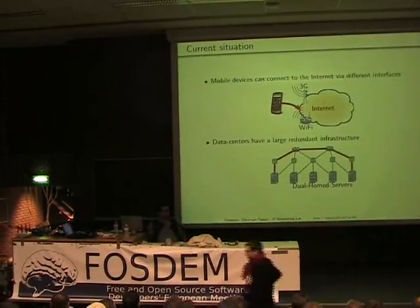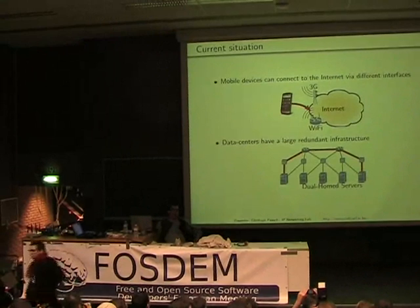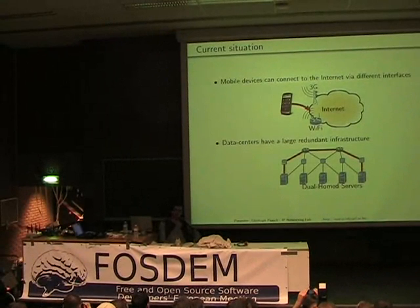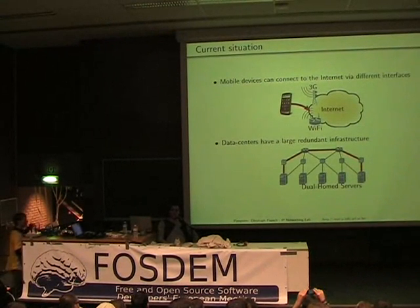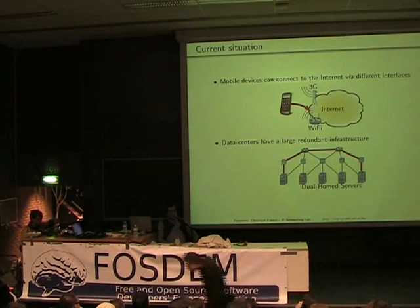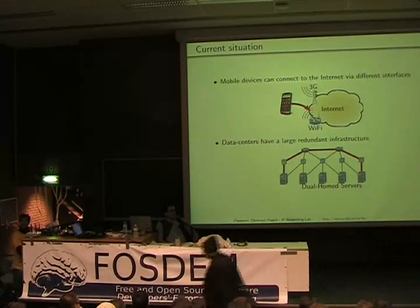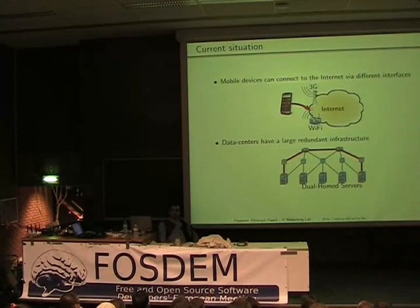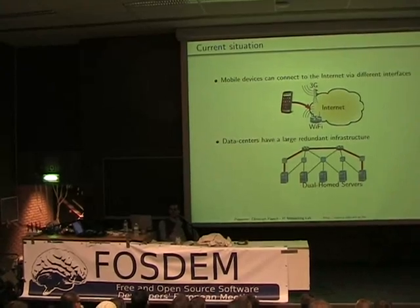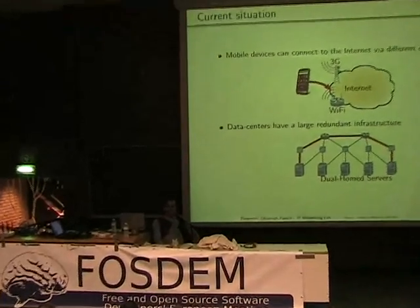To start off, you all have your mobile phones with Wi-Fi and a 3G interface. And you can connect, for example while you are here, to the FOSDEM network and also to a 3G network. But unfortunately, you will only be using one of these interfaces, potentially only the Wi-Fi interface. So you are not using all the resources available to your phone.